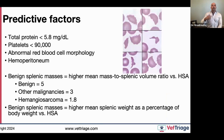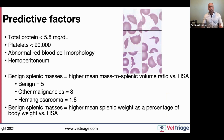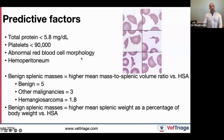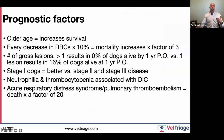Predictive factors for hemangiosarcoma include hypoproteinemia, thrombocytopenia, abnormal blood cell morphology, and hemoperitoneum — all associated with higher risk of hemangiosarcoma diagnosis. Mean mass-to-splenic volume ratio is higher in benign disease versus malignancies, especially compared to hemangiosarcoma. Benign splenic masses also tend to have a higher mean splenic weight as a percentage of body weight. These aren't foolproof, but help guide client discussion.